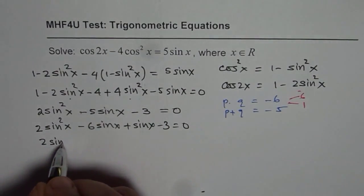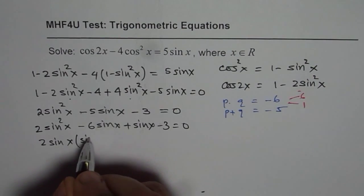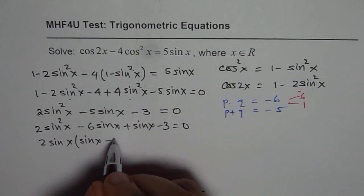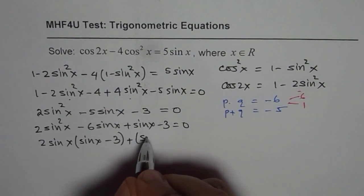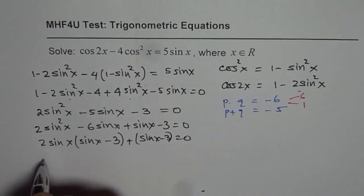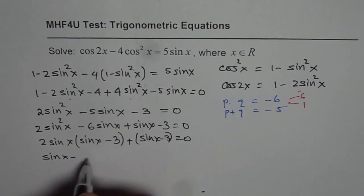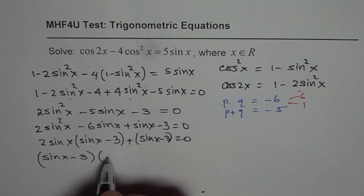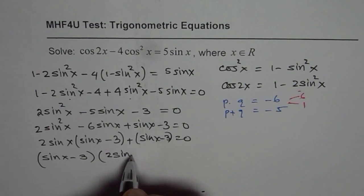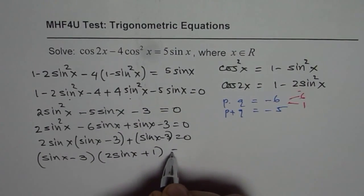We can take 2 sine x common. So we are left with sine x minus 3, plus we already have sine x minus 3 here, equals 0. So sine x minus 3 is one of the factors. The other one is 2 sine x plus 1 equals 0.